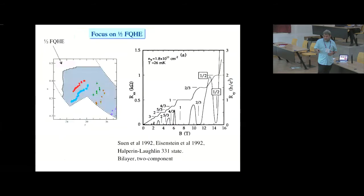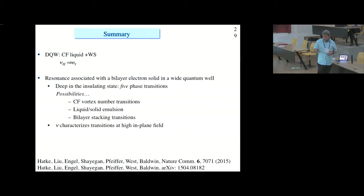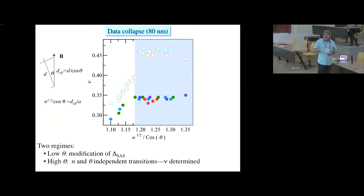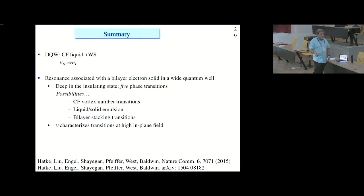We can collapse the data by simply taking n to the one-half divided by cosine theta, which is the effective tunneling length along the field divided by the carrier separation. And in that way, each transition collapses from the various densities, and we see very clearly in this plot that you're down to something happening at a fixed filling as would be predicted by a composite fermion transition, for example, in the high tilt, more bilayer-like, low tunneling situation. I'm running low on time, and I'll put up my summary. Thanks for your attention.